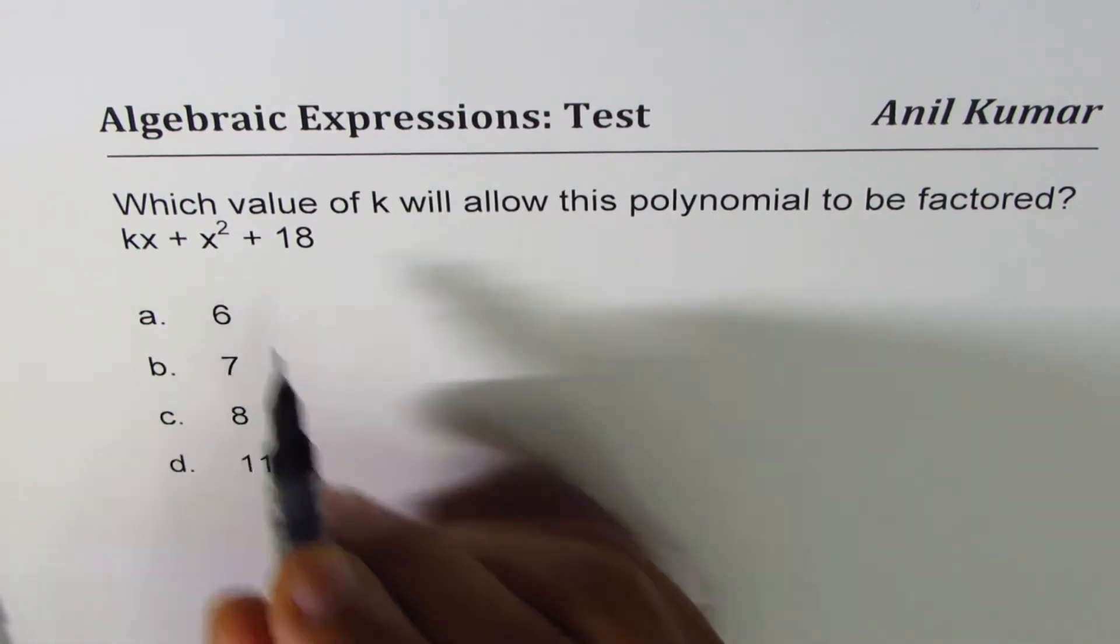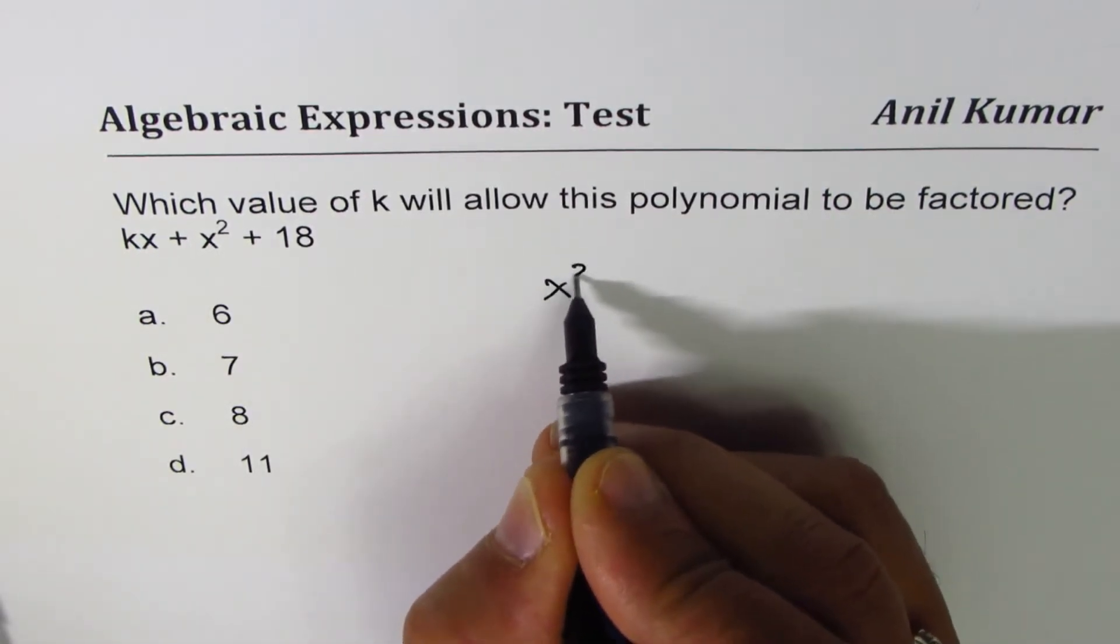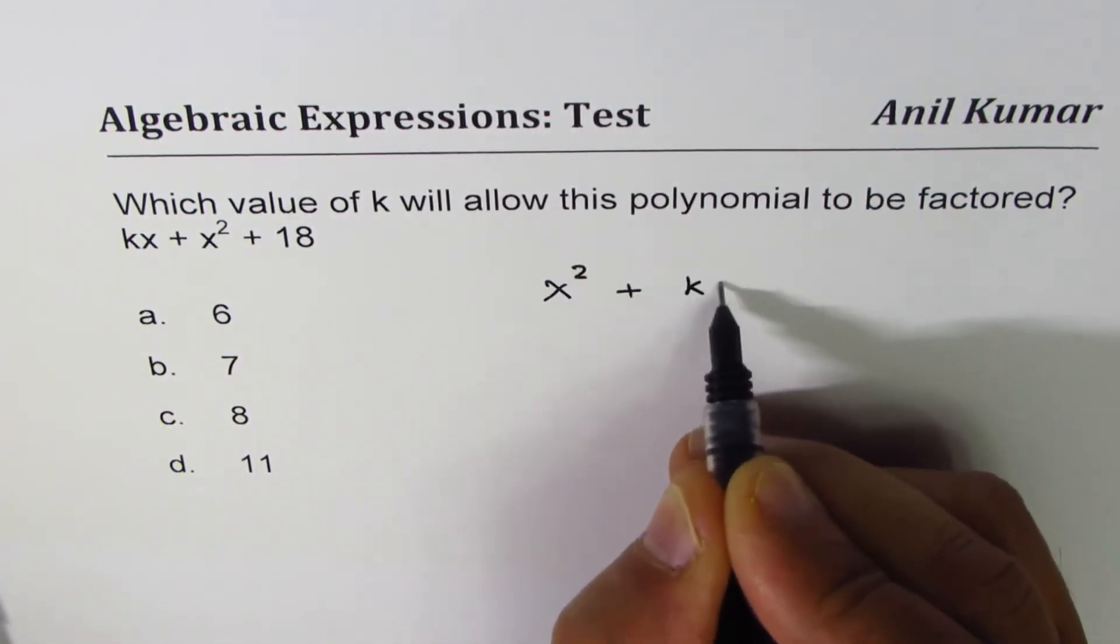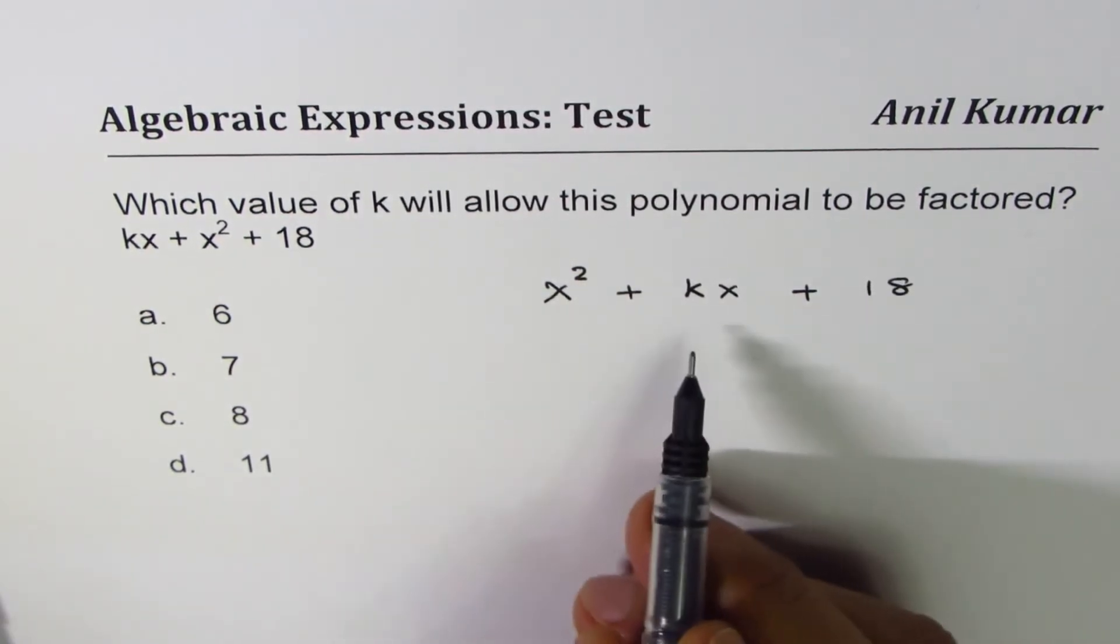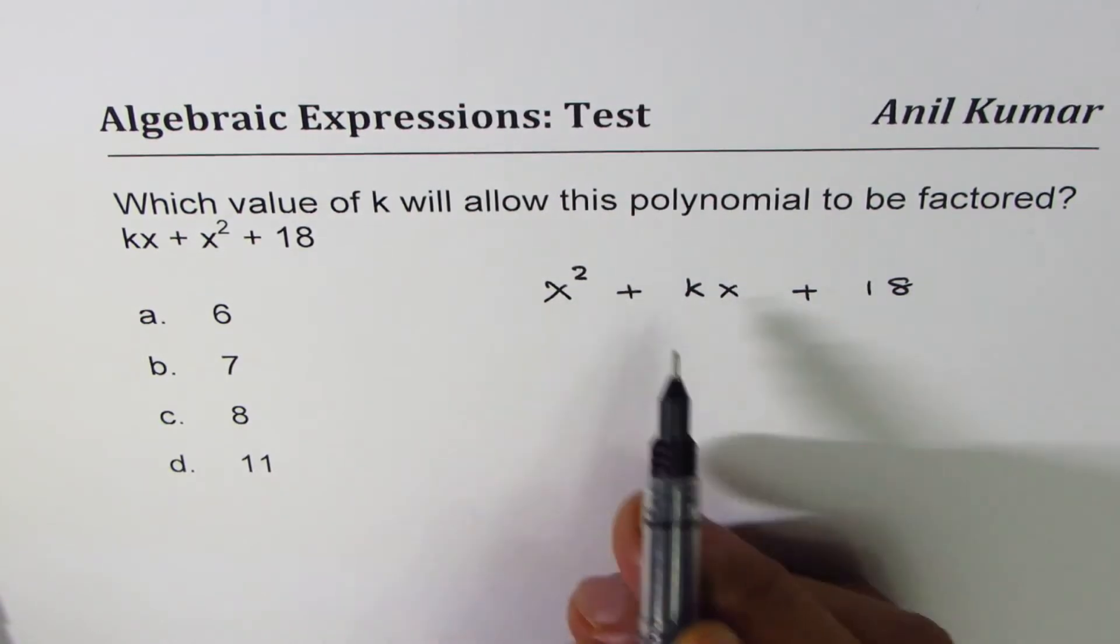So let's rewrite this polynomial in proper order. It is x squared plus kx plus 18. To figure out what is the combination which can help factor,